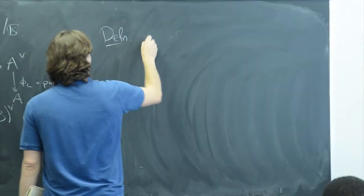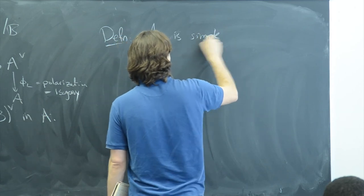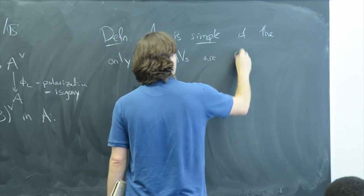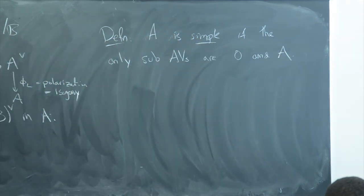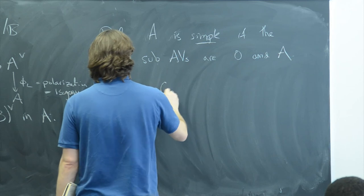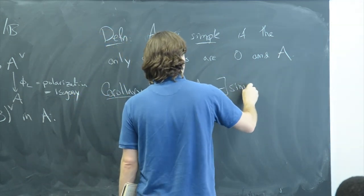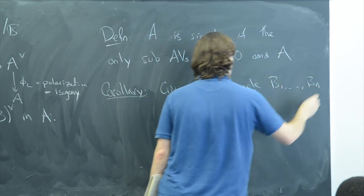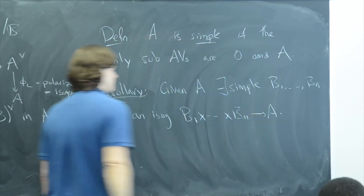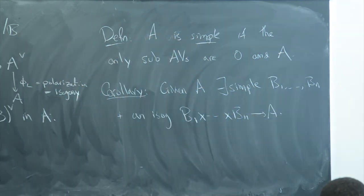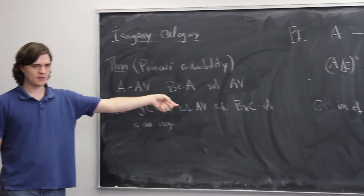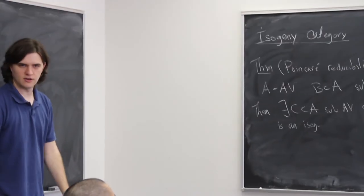An abelian variety A is called simple if its only abelian subvarieties are 0 and A itself. A corollary of Poincaré reducibility is that any abelian variety A is isogenous to a product B₁ × ... × Bₙ of simple abelian varieties. The proof is by induction on dimension: if A is not simple, it has a proper nontrivial abelian subvariety B, with a complement C from Poincaré reducibility, and both B and C have smaller dimension.